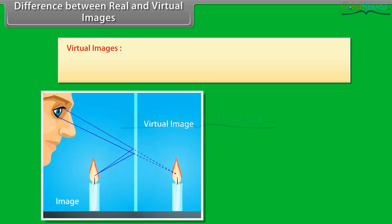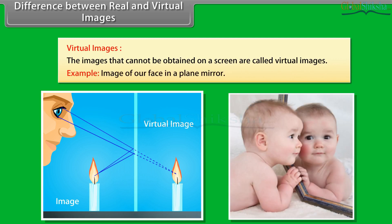Virtual images: The images that cannot be obtained on a screen are called virtual images. Example: Image of our face in a plane mirror. It is formed by a concave lens.